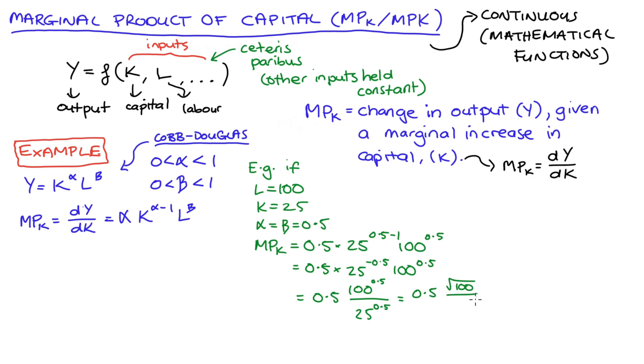Now anything to the power of a half is really just the square root, and the square root of 100 is 10 and the square root of 25 is 5. 10 over 5 is 2, so we get 0.5 times 2, which is 1. In words, when all of our parameters and variables are at the levels that I specified, if we increase capital a little bit holding everything else constant, our output would increase by 1.